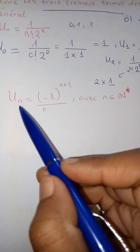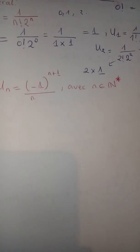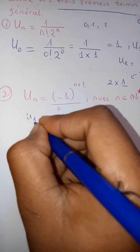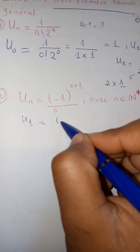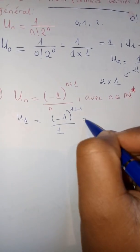So we're going to start with $U_1$ because $n \in \mathbb{N}^*$. We start with $U_1 = (-1)^{1+1}/1$, which equals $(-1)^2/1$.